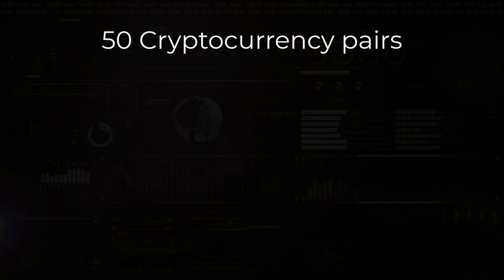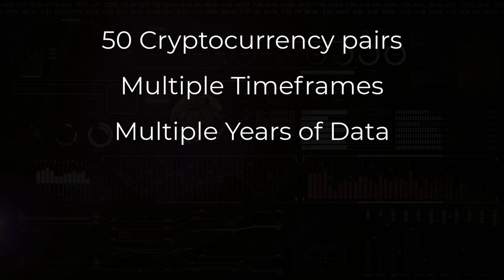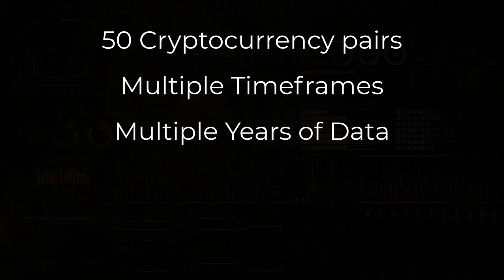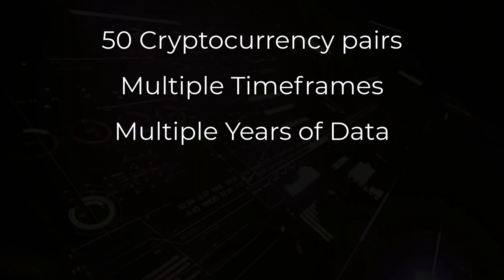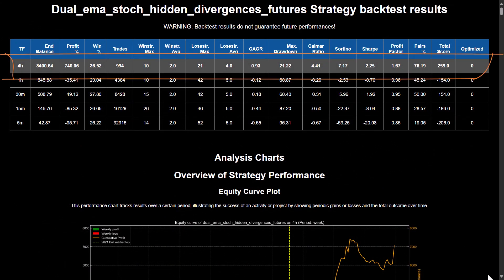After coding this complete algorithm and testing it out on 50 cryptocurrency pairs on multiple timeframes and over multiple years of data, we can finally decide if this trading strategy has the potential to be profitable in the future. I tested it on multiple timeframes, and in my case, the 4-hour timeframe seems to give better results than the 1-hour timeframe.